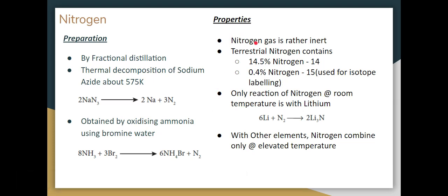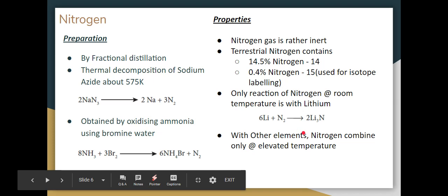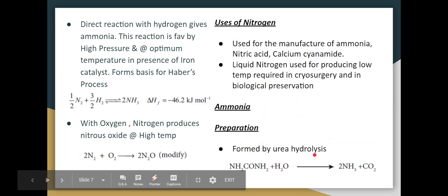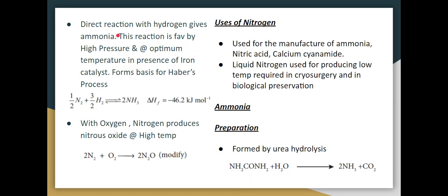Nitrogen properties: Nitrogen gas is rather inert, meaning it's not very reactive. In terrestrial nitrogen, 14N is 99.6% and 15N is 0.4%. Nitrogen-15 isotope is used in isotope labeling.